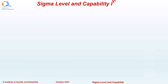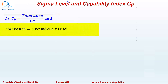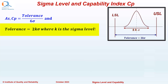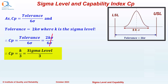Let us now understand the mathematical relationship between Sigma Level and Process Capability Index CP. Remember, CP equals Tolerance upon 6 Sigma, and Tolerance equals 2K Sigma, where K is the Sigma Level. Therefore, CP equals Tolerance upon 6 Sigma, which equals 2K Sigma upon 6 Sigma. Sigma gets cancelled and we can say that CP equals K upon 3, that is equal to Sigma Level upon 3. We can also say that Sigma Level equals 3 times CP.